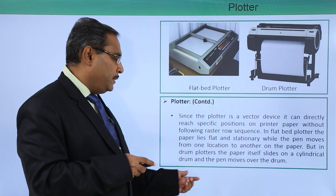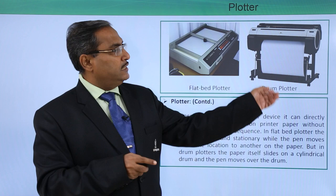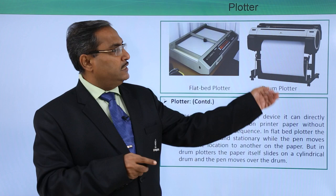But in the drum plotter the paper itself slides on a cylindrical drum and the pen moves over the drum. The page will scroll and the pen moves and draws the respective diagram on the piece of paper. This is the plotter, and we have discussed the difference between printer and plotter.